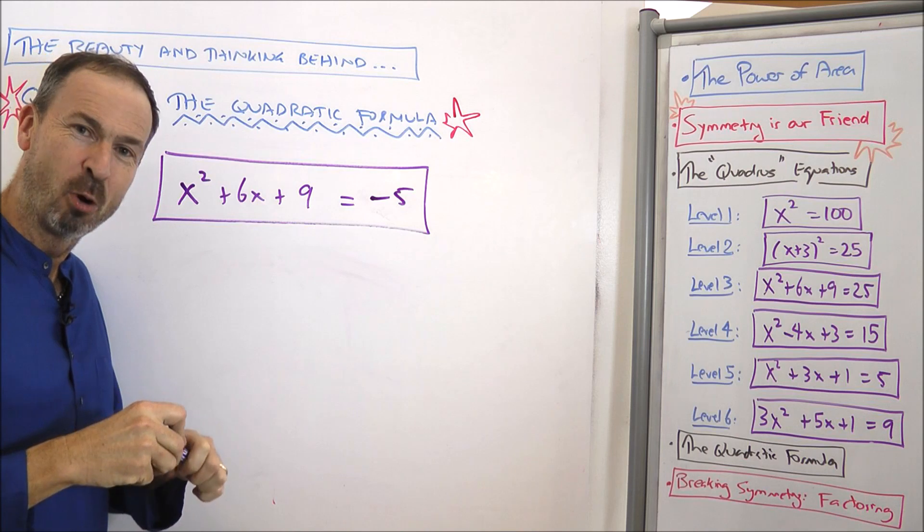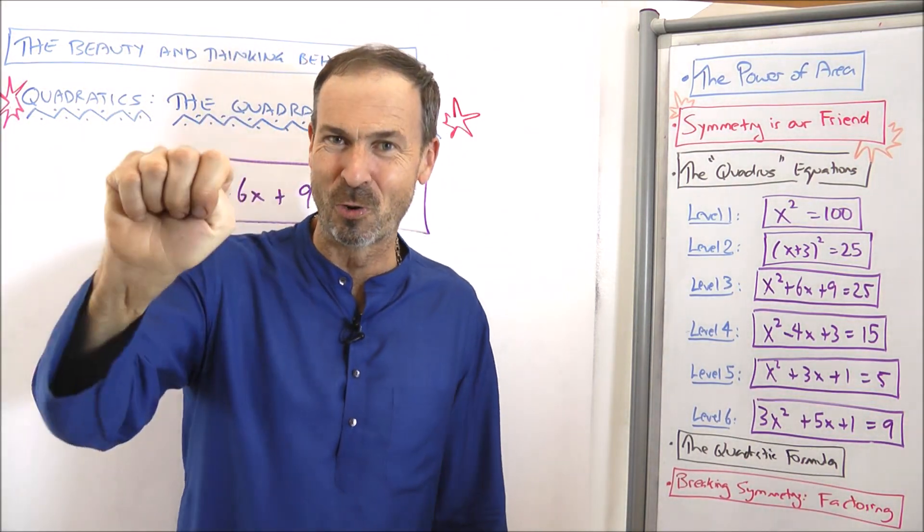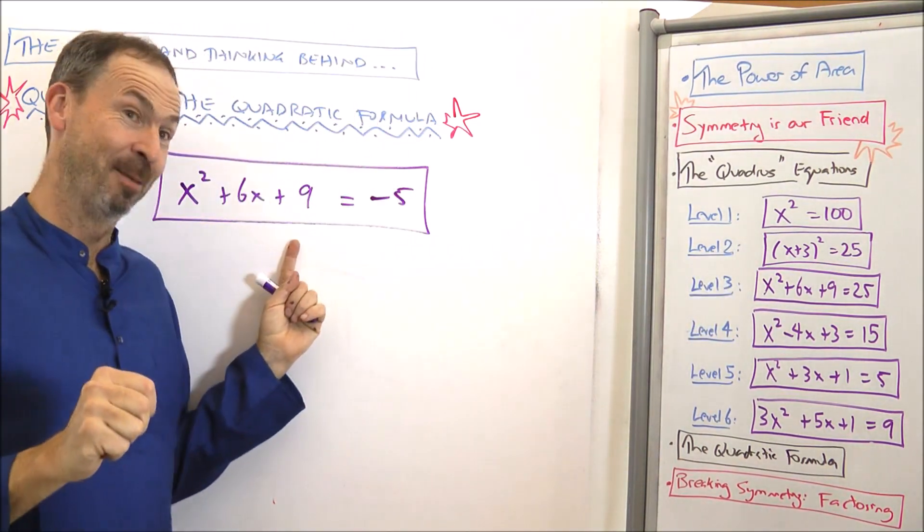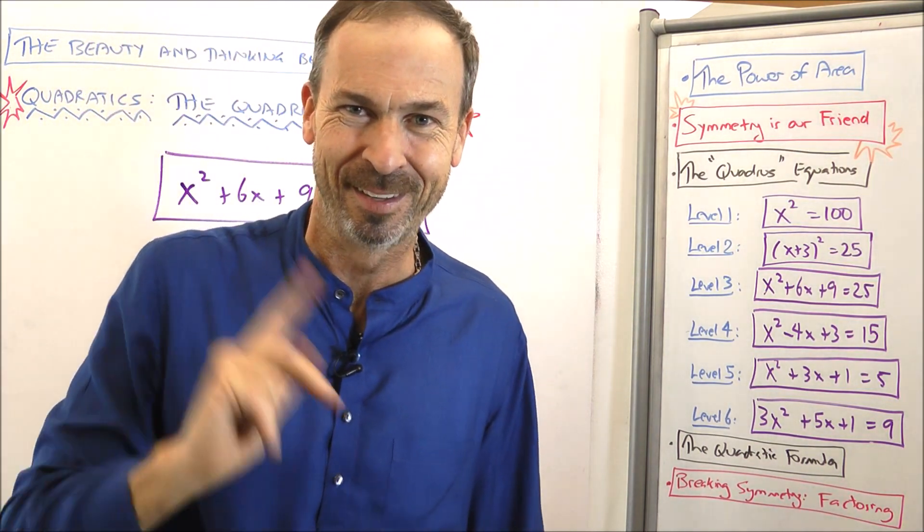So, there's something about the quadratic formula either giving two solutions, one solution, or no solutions. It's easy to see at level 2 stage. It's less tricky to see with a quadratic formula. So, how do you see it in a quadratic formula? Think about it.